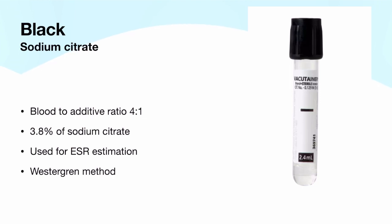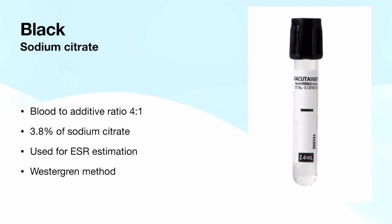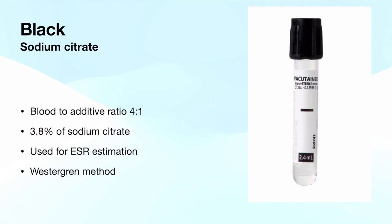The reason the concentration of sodium citrate was important for the light blue tube is because there is also a 3.8% sodium citrate. The black vacutainer uses 3.8% sodium citrate with a blood to additive ratio of 4:1, and it is used for ESR estimation by the Westergren method. The NEET SS question had options of 3.2%, 3.8%, 9:1, and 4:1 — so there were four options.